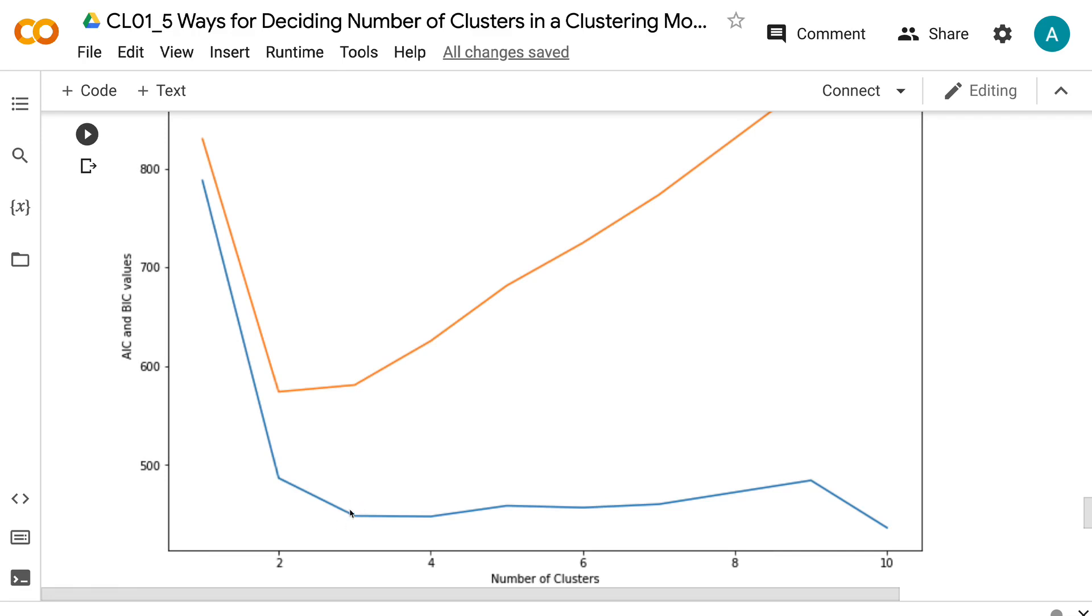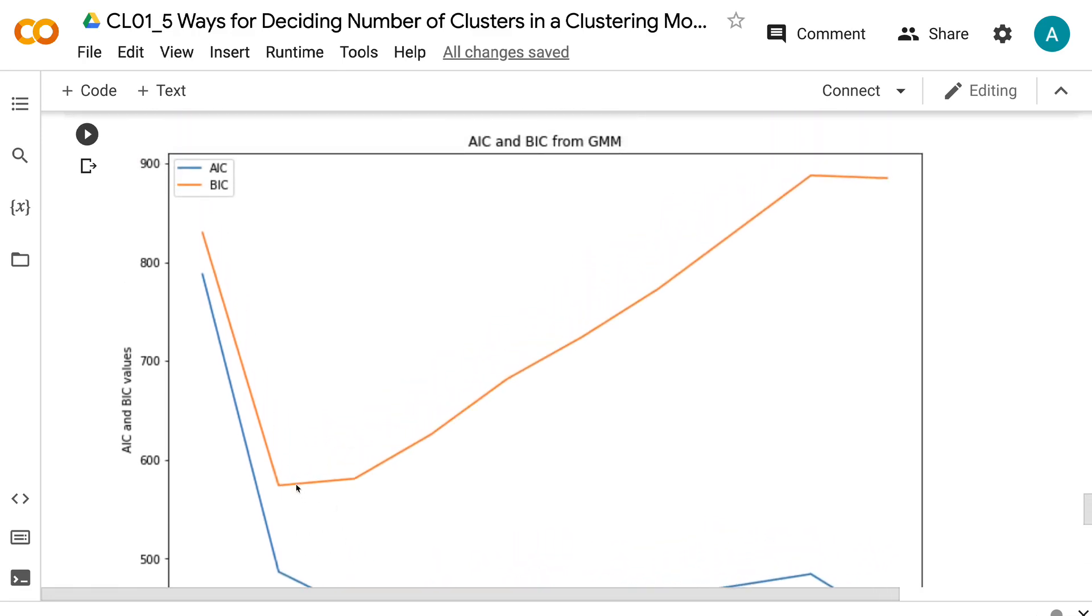The BIC has the smallest value at the two-cluster model, and the three-cluster model has a similar value, suggesting that the optimal number of clusters is two or three.